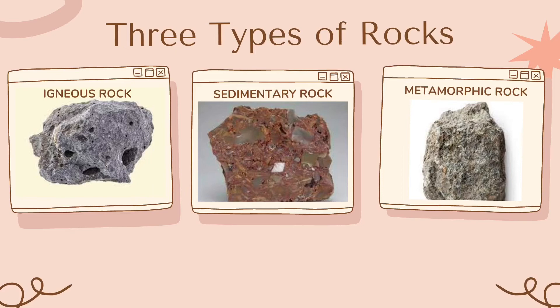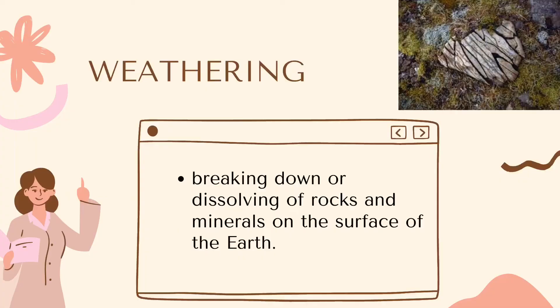Sedimentary rocks are largely found on the earth's surface and cover 75% of the earth's area. These rocks are generally not crystalline in nature, and they are soft and have many layers as they are formed due to the deposition of sediments. Metamorphic rocks were once igneous or sedimentary rocks but have been changed as a result of intense heat and/or pressure within the earth's crust, and they are crystalline and often have a foliated or banded texture.